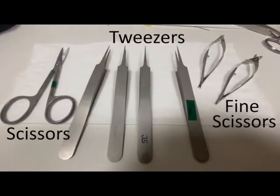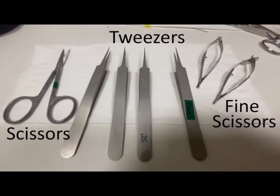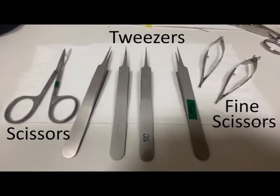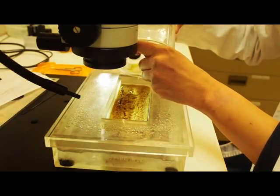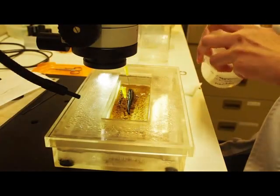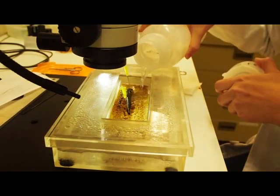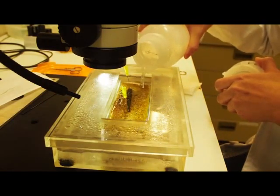Here you can see our dissecting instruments: different scissors to open the leech and different kinds of tweezers to pin and dissect the ganglia. Now we need to transfer the leech from the beaker to a wax bed and cover it with cold saline to maintain the normal cell function of the leech's nervous system. And now we can start dissecting the leech.